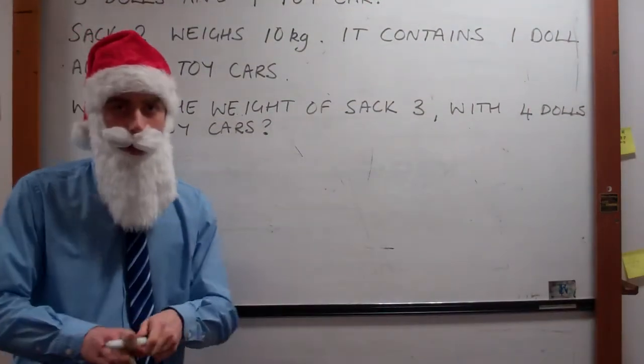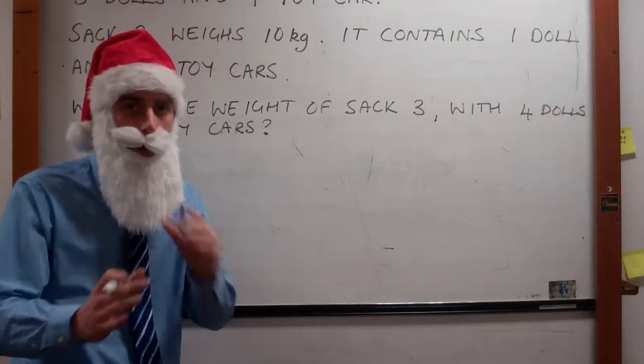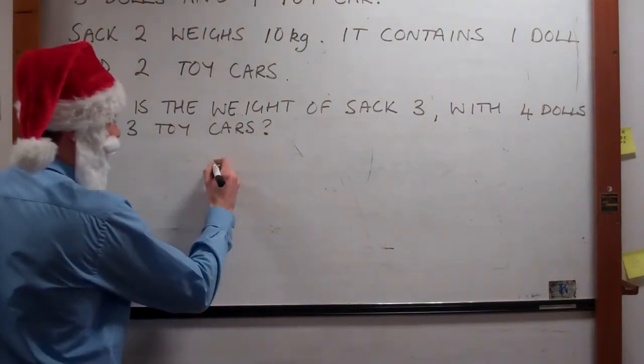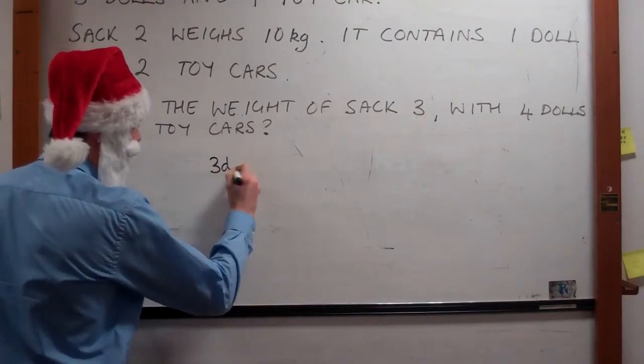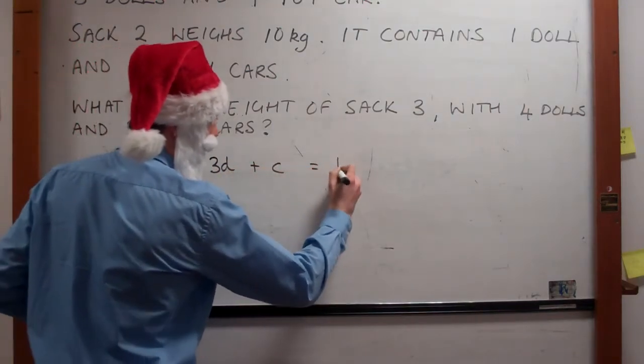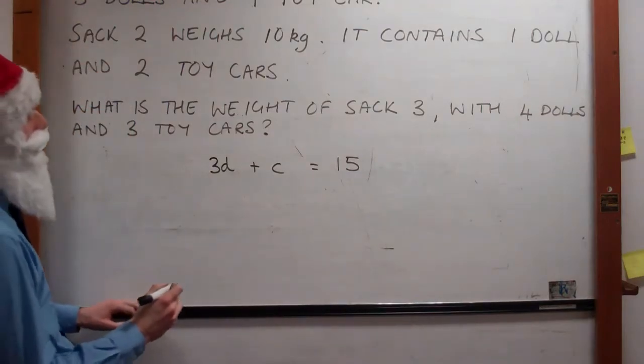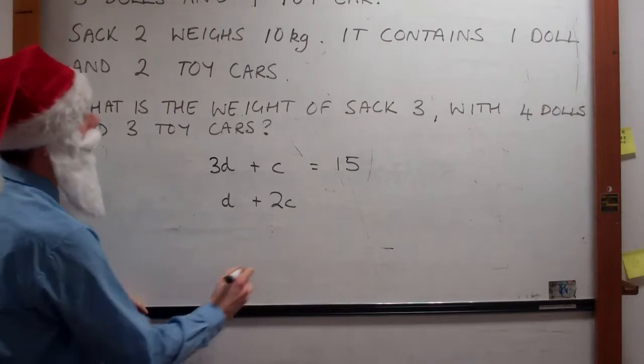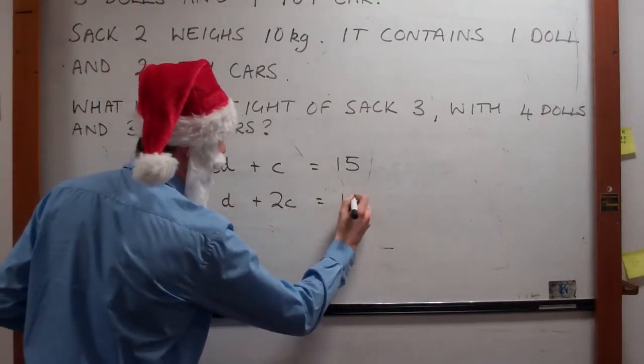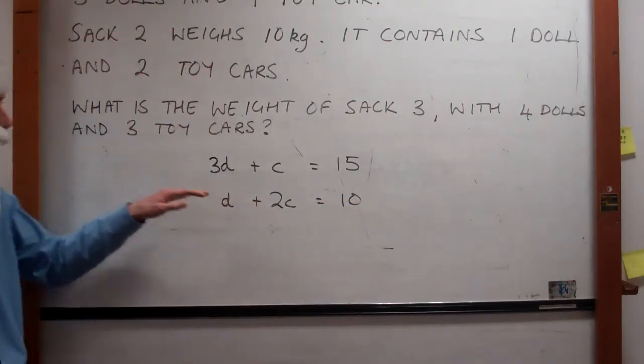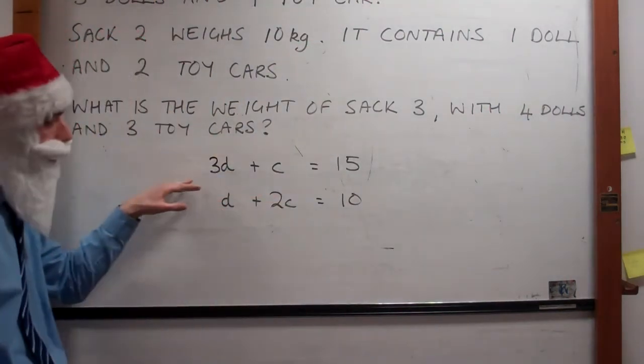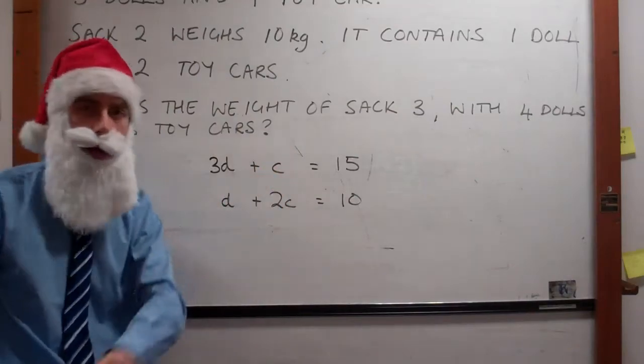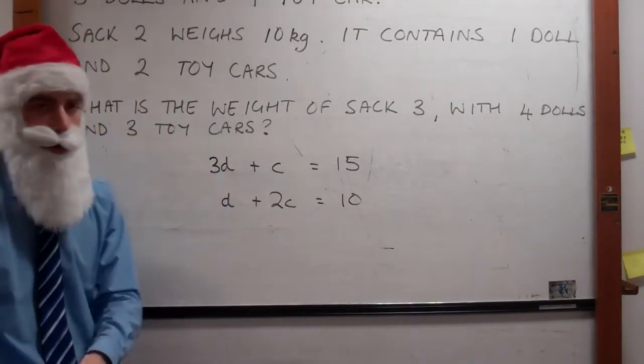What we need to do is take our sentences and turn them into equations. Our first sentence says three dolls and one toy car is 15 kilograms, and the second sentence says one doll and two toy cars is 10 kilograms. You can see that all I've done is taken the sentences and turned them into easy to read equations, so we've got D standing for dolls and C standing for toy cars.